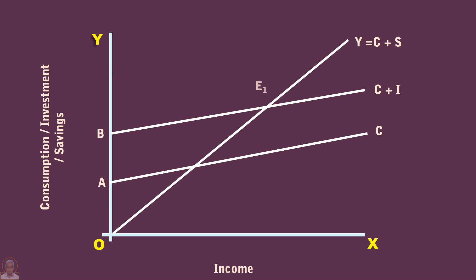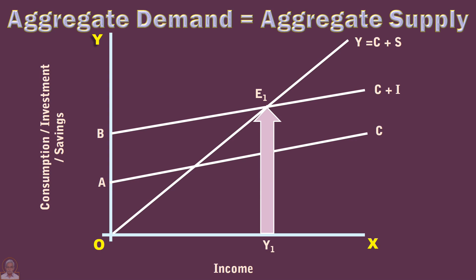At point E1, the aggregate demand curve cuts the aggregate supply curve. The economy is in equilibrium. Y1 is equilibrium income. Aggregate demand is Y1E1. Aggregate supply is also Y1E1.